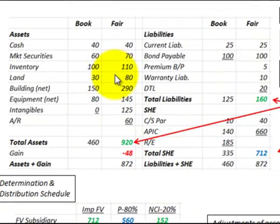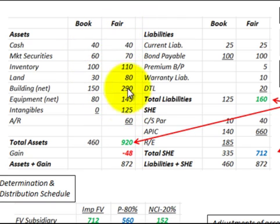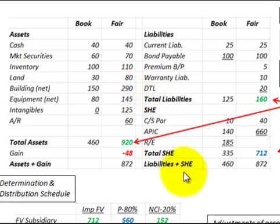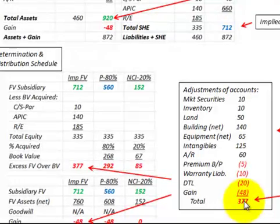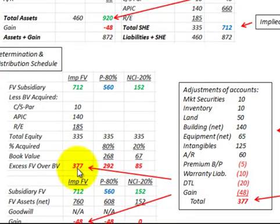Next we have to determine the adjustments to the subsidiary's accounts in this consolidation. Looking at the balance sheet, we take the difference between book value and fair value for both assets and liabilities — those are the adjustments we have to include. The adjustments are listed, including the gain of $48,000. The total adjustments would be $377,000, which agrees with our distribution schedule's excess of fair value over book value of $377,000.